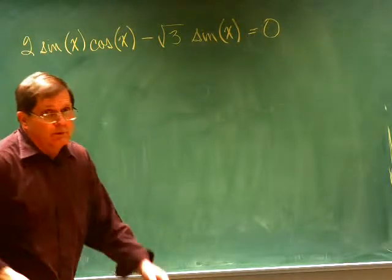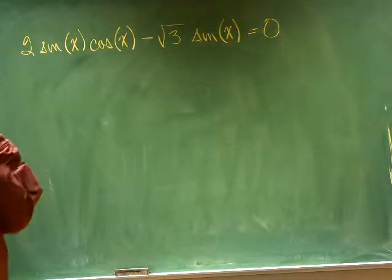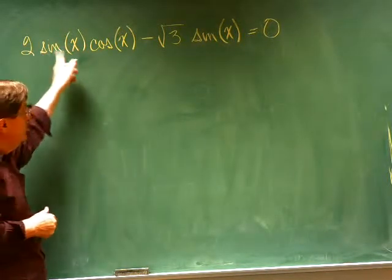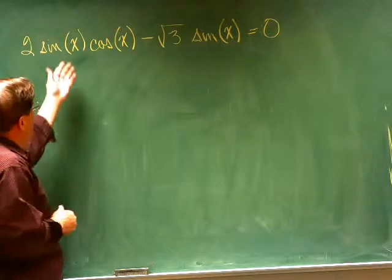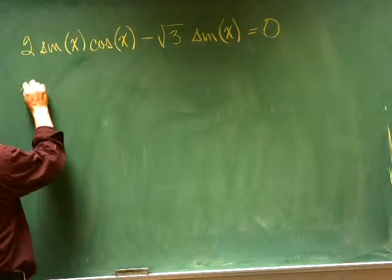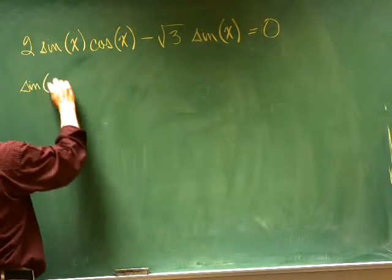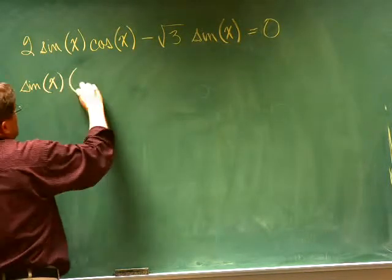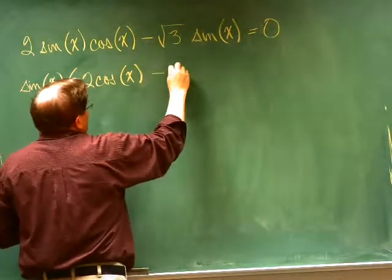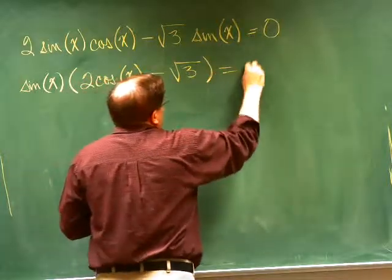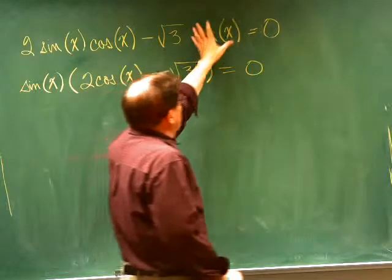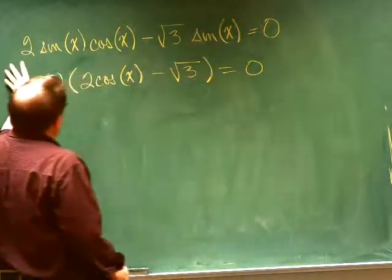One of the big objectives in pre-calculus is to be able to solve equations that involve trigonometry. Here's a nice example — we want to find all the x's that would make this equation true. It's nice to observe that we could factor out a sine of x. So this would be sine of x times the quantity two cosines of x minus the square root of 3.